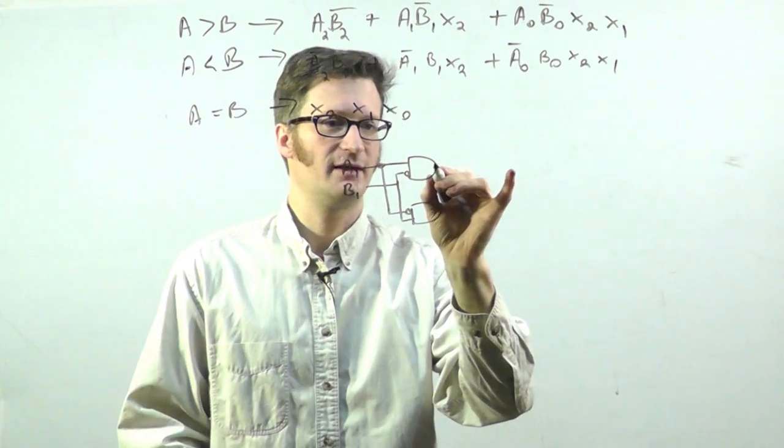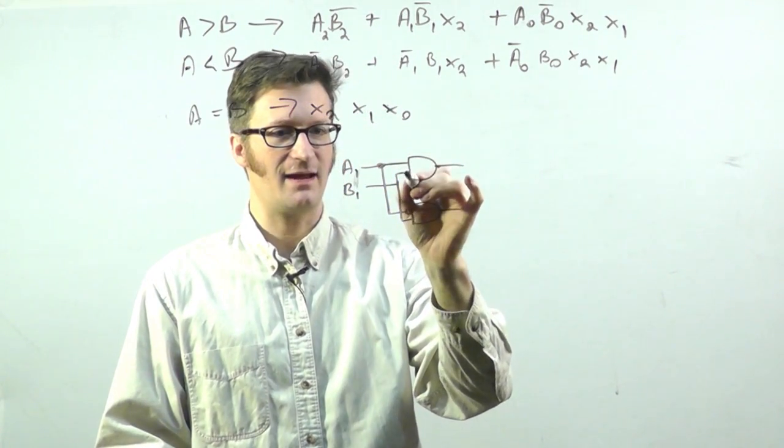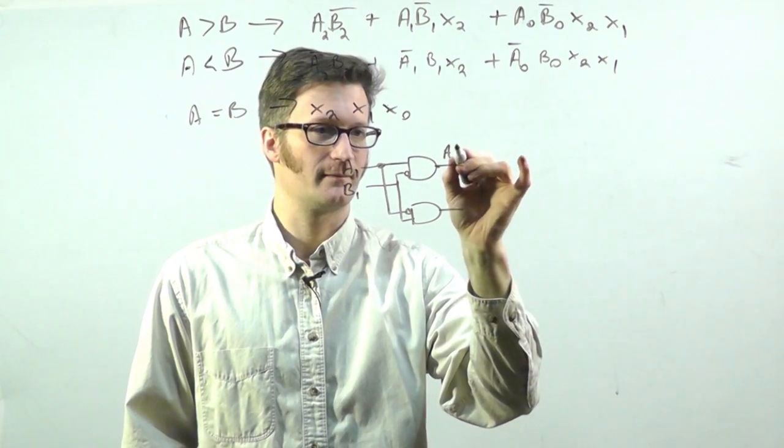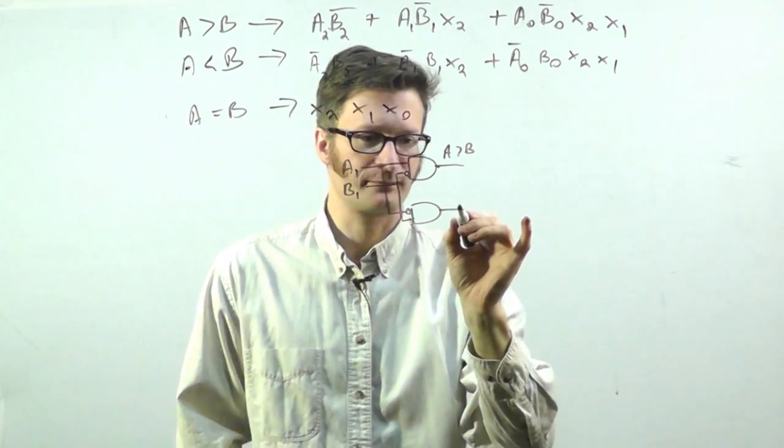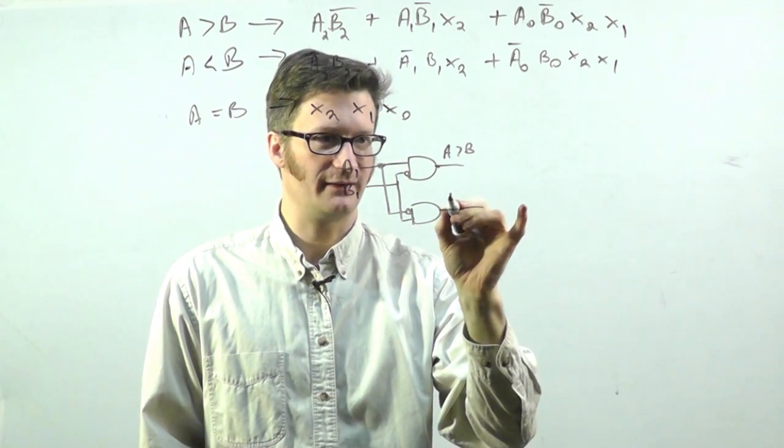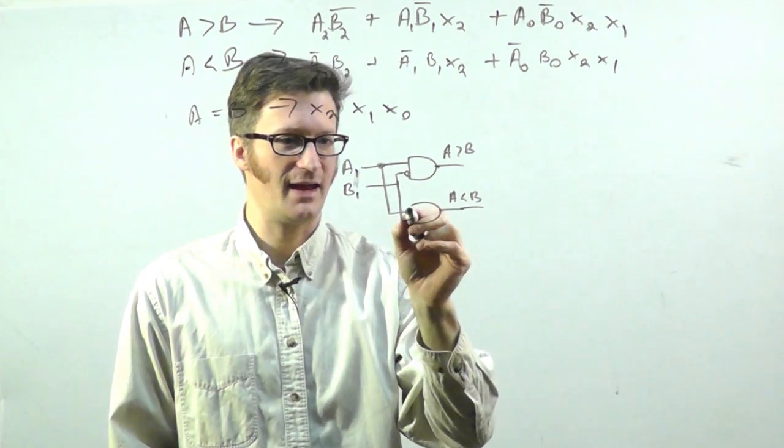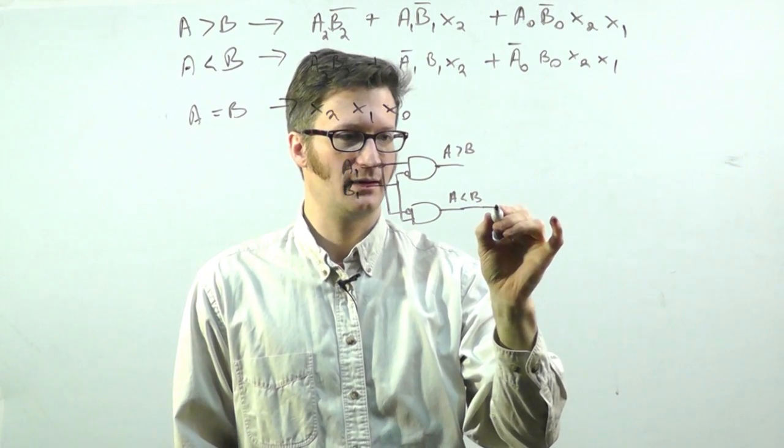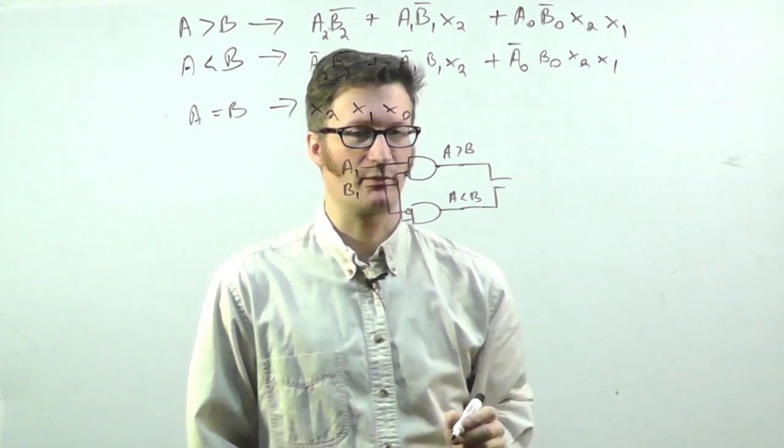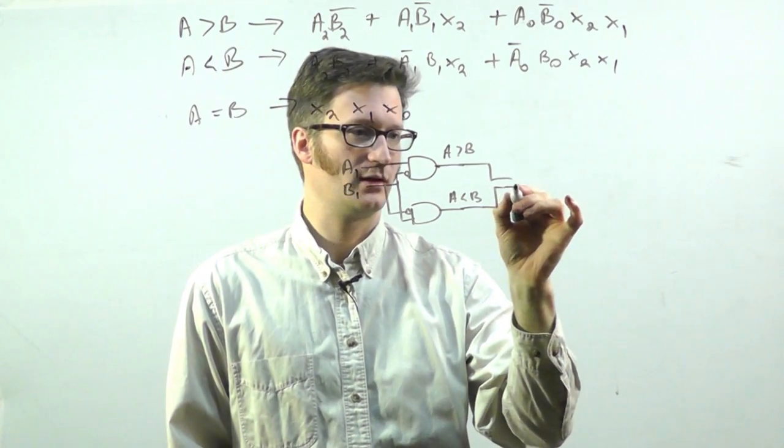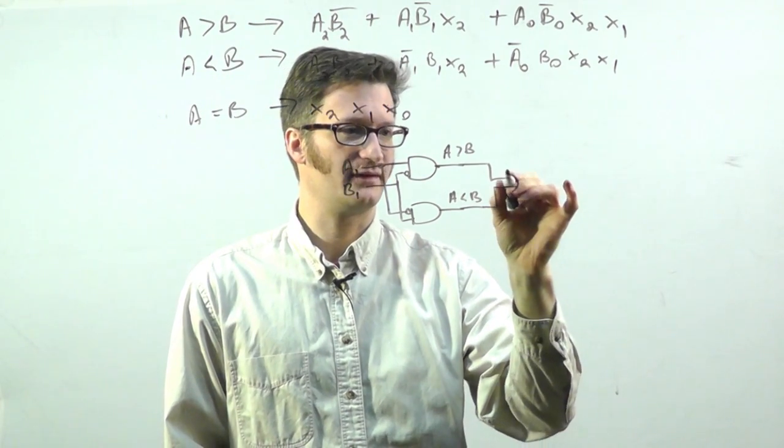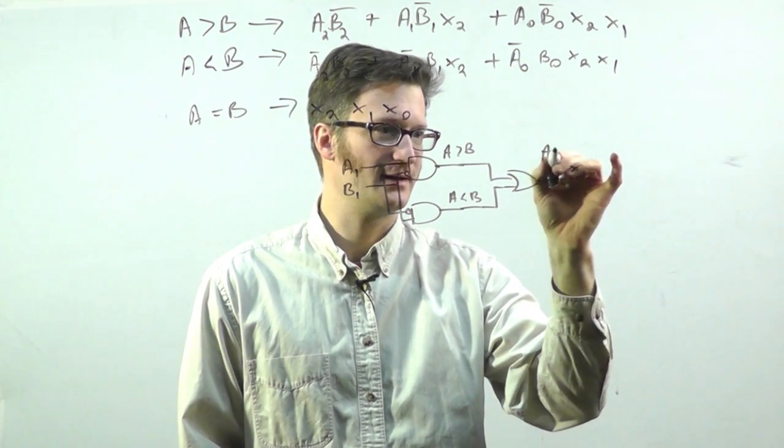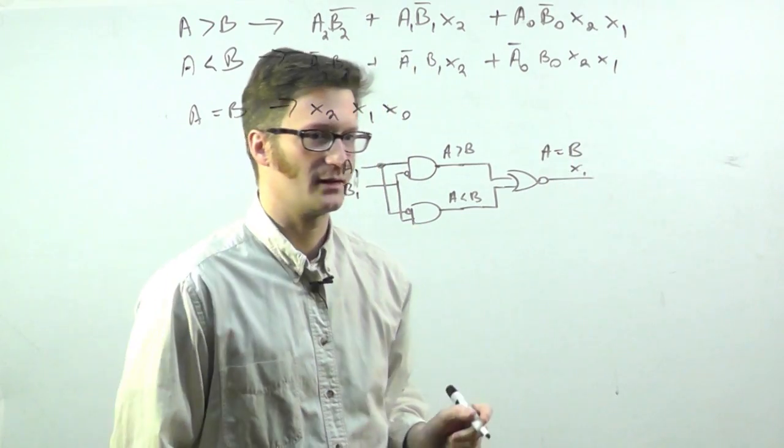So let me just draw it and then I'll start talking. So here we have our term. In this case, this is A B̅. So that would be A is greater than B for this bit. And this one is A less than B because this is A̅ B. And then find our A equals B term or X sub i term. We run this into a NOR gate. And this is our X sub i or A equals B.